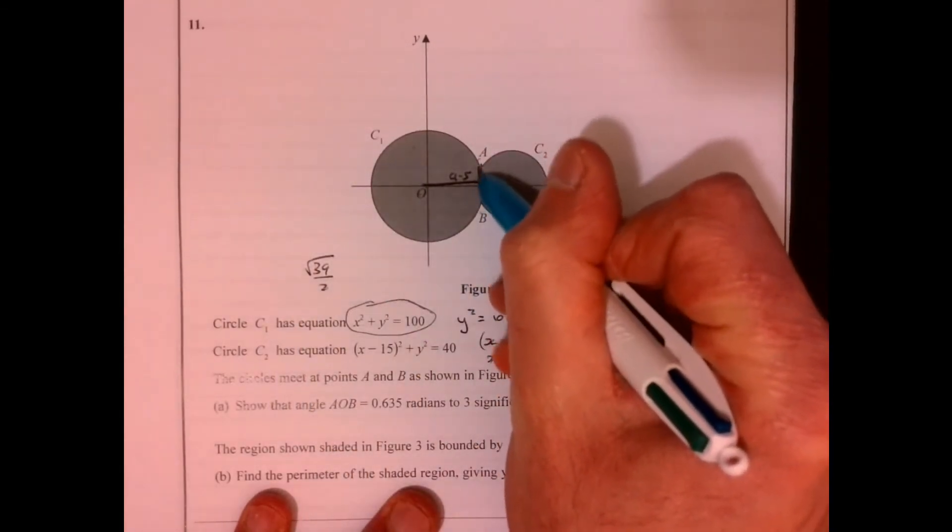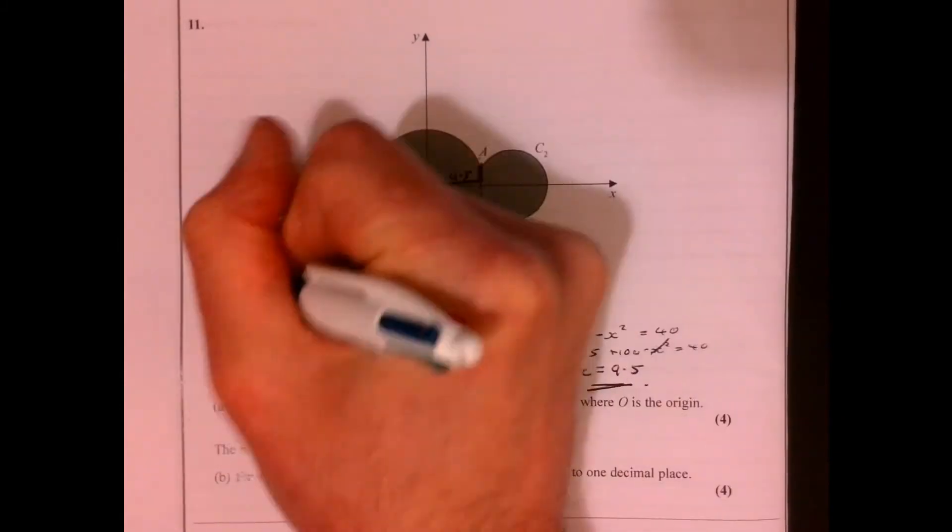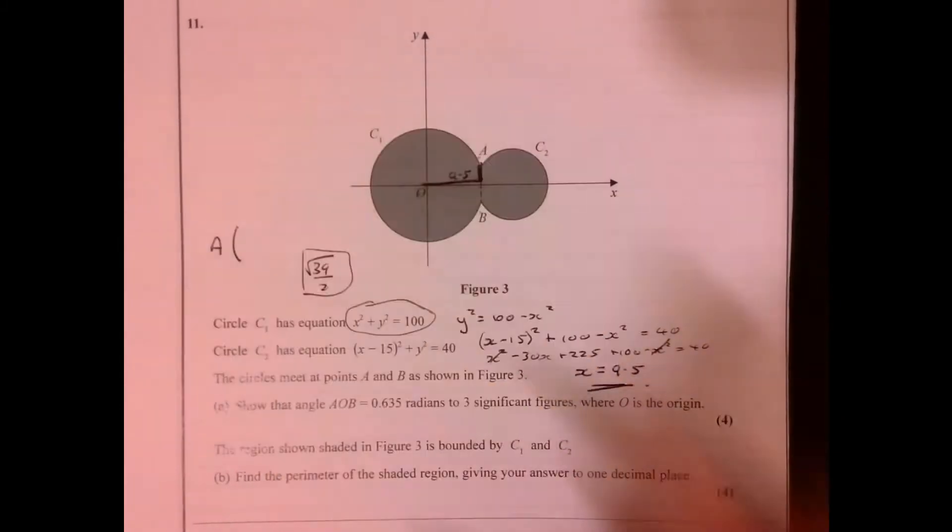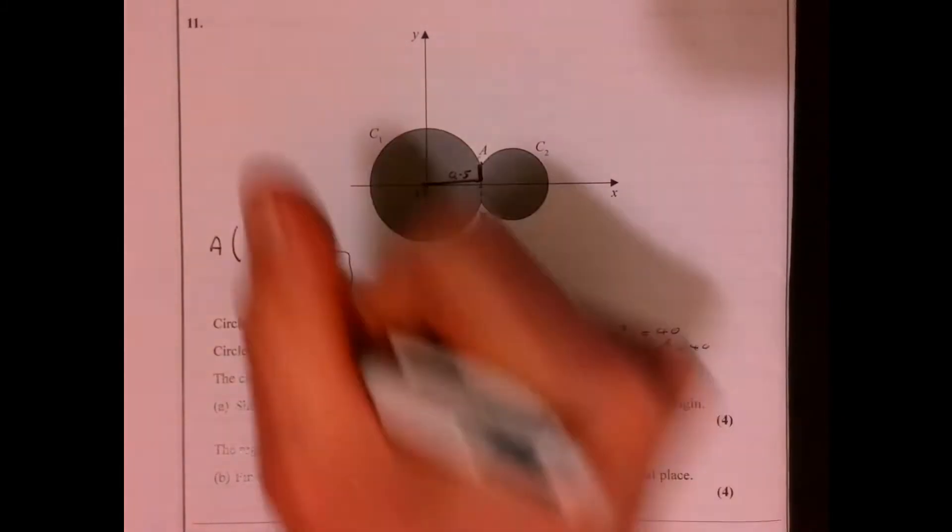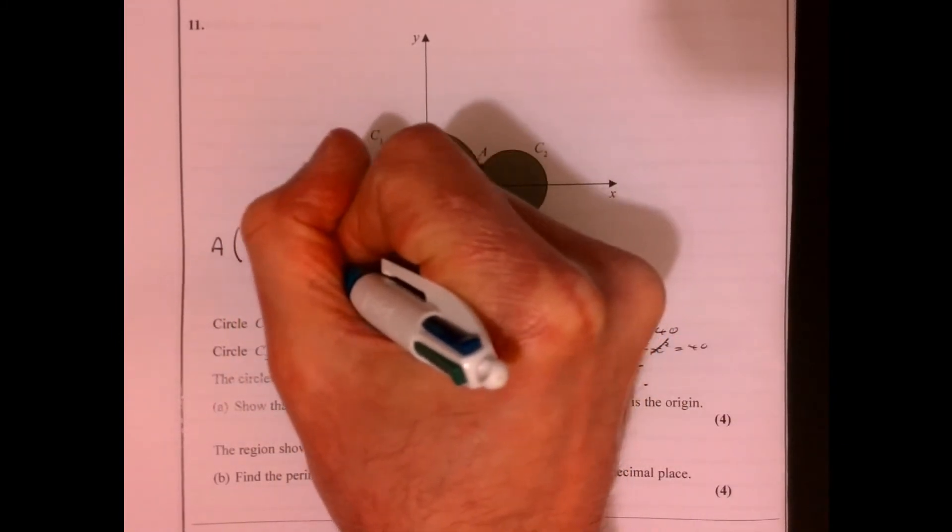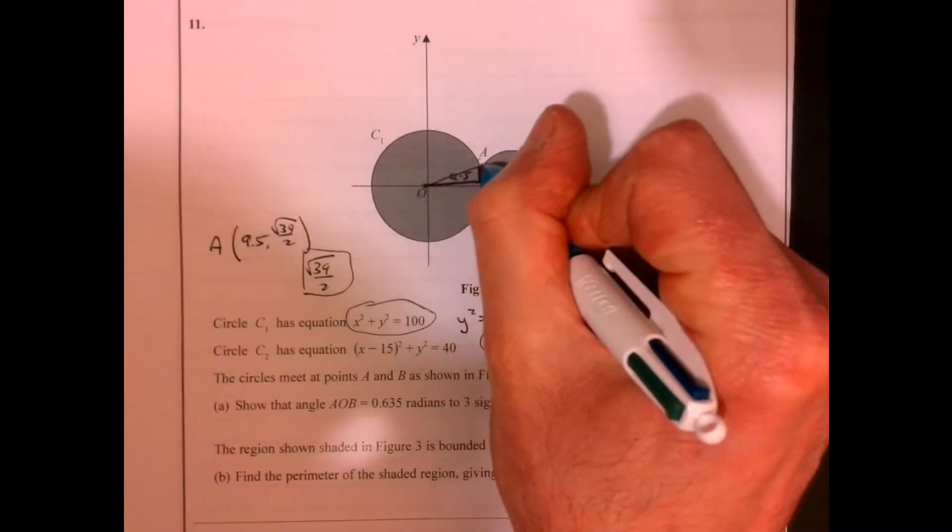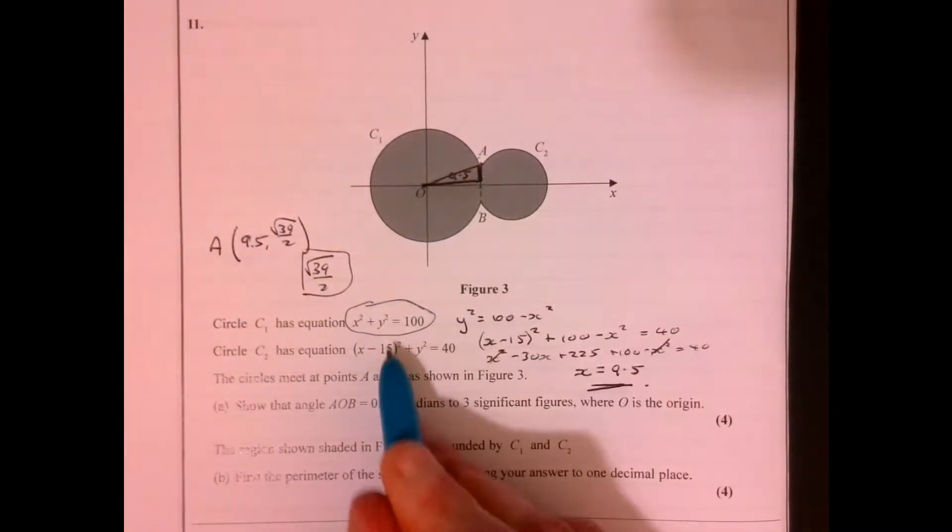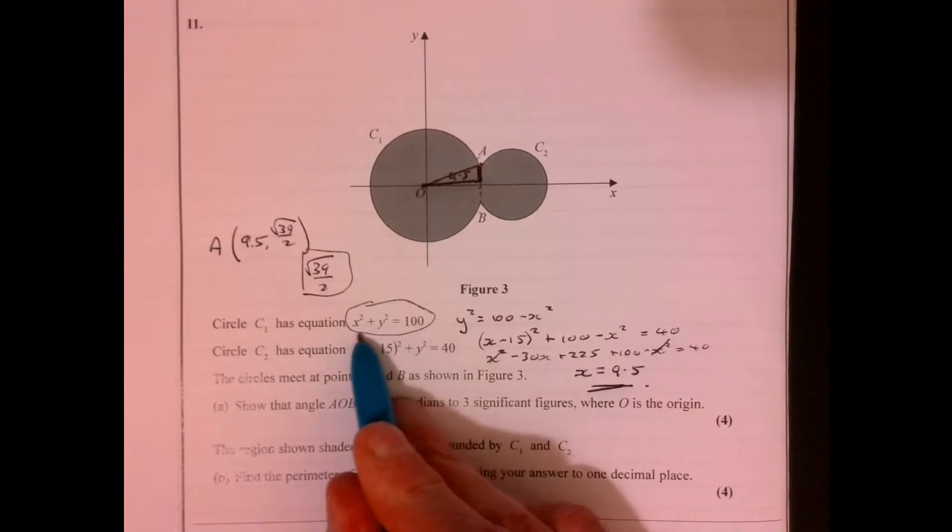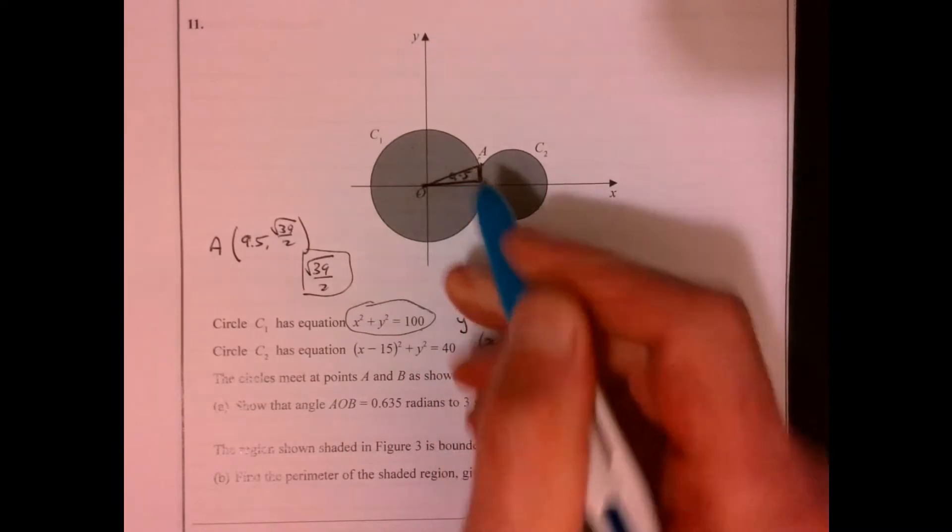Okay, so that's that part just there. All right, so if you're thinking about the coordinates of A, the coordinates of A would have to be 9.5 and root 39 over 2. Now it's also worth bearing in mind that distance is just there, because using our knowledge of circle geometry, the radius—that's the radius, isn't it—so that distance is 10.